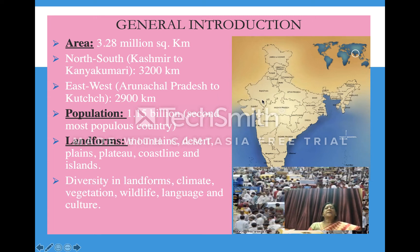India has an area of about 3.28 million square kilometers. From Kashmir to Kanyakumari it is 3200 kilometers, and from Arunachal Pradesh to Kutch it is 2900 kilometers. India is the second most populous country with 1.15 billion population. India has different landforms such as mountains, desert, plains, valley, plateau, coastline, and islands.